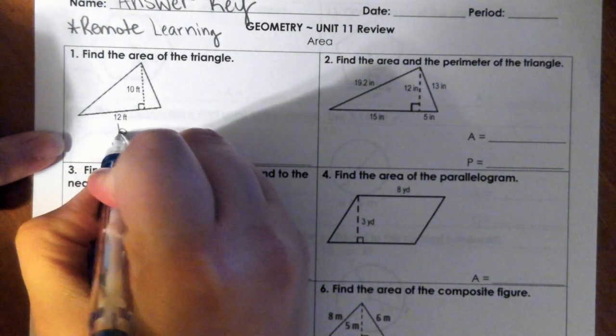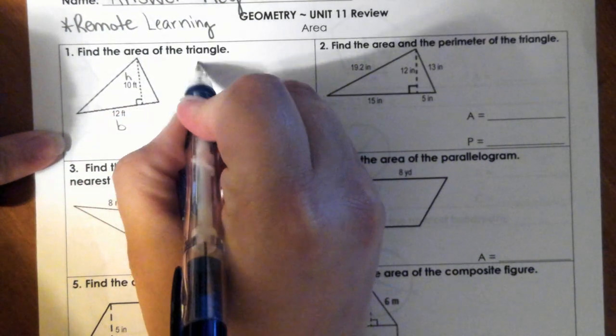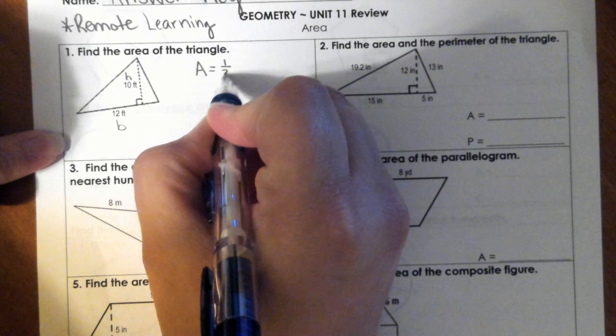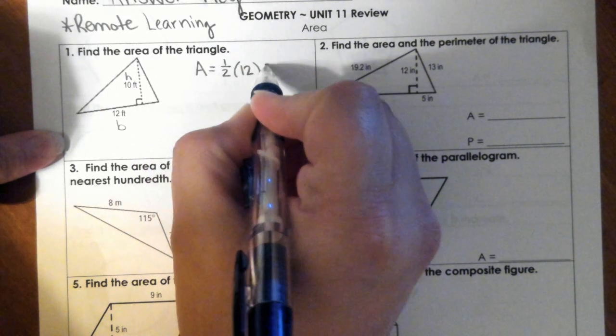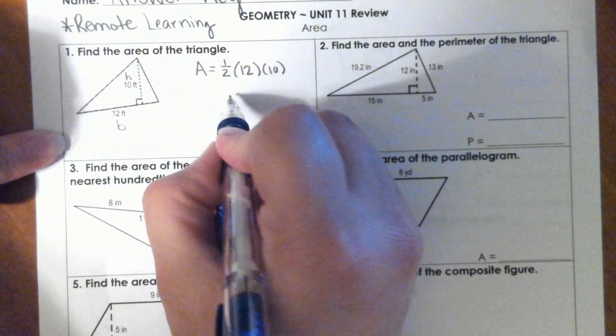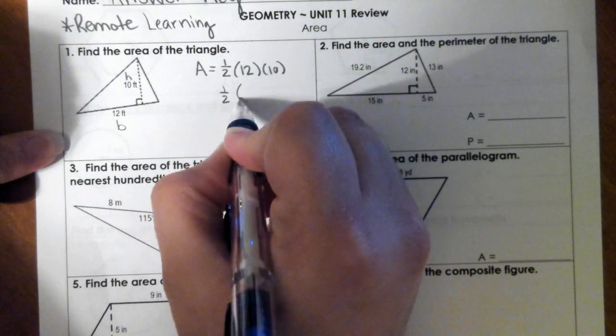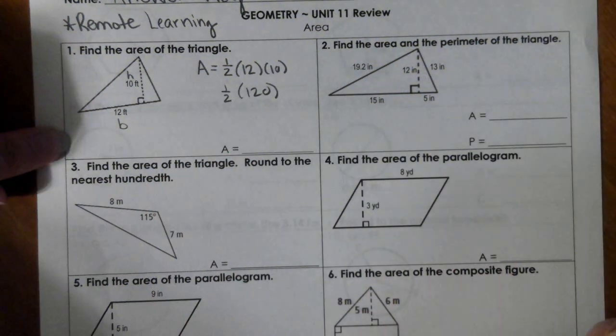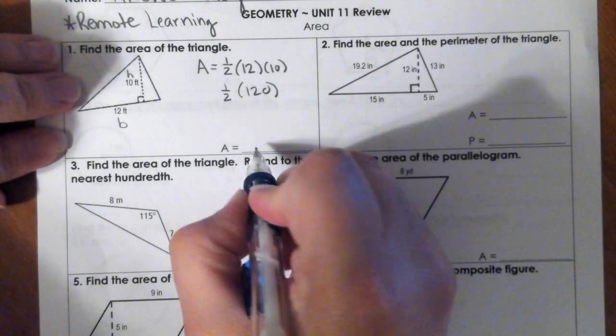Here's your base, here's your height. So I would do one half times 12 times 10. 12 times 10 is 120, and if I take half of 120, we get 60 feet squared.